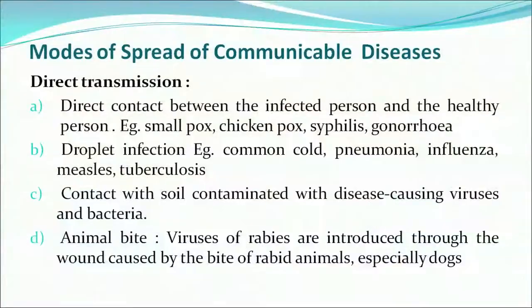Now we come on to the modes of spread of communicable diseases. First is direct transmission, which means direct contact between the infected person and the healthy person. Examples include smallpox, chickenpox, syphilis, gonorrhea, droplet infection — common cold, pneumonia, influenza, measles, tuberculosis — and contact with soil contaminated with disease-causing viruses and bacteria.